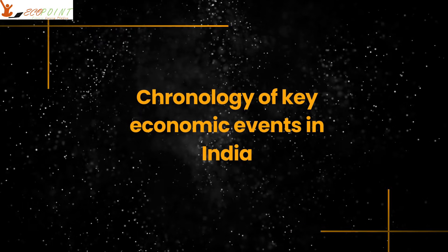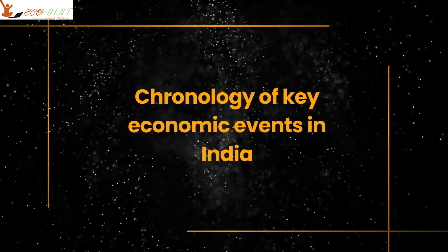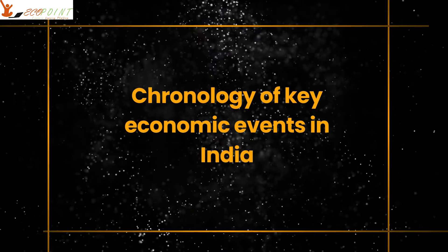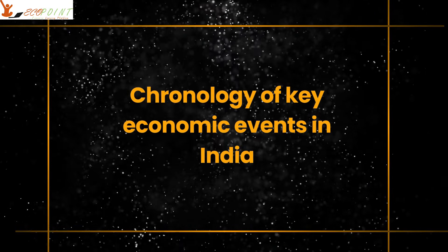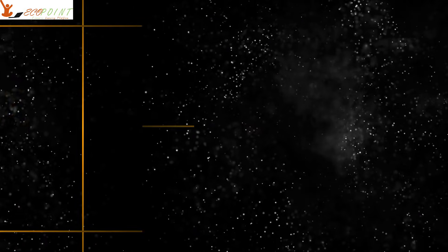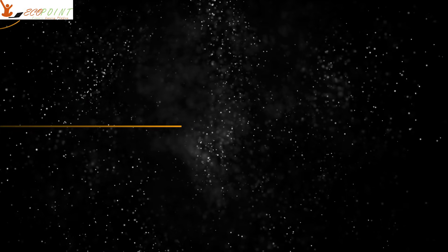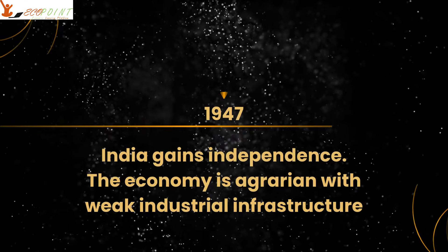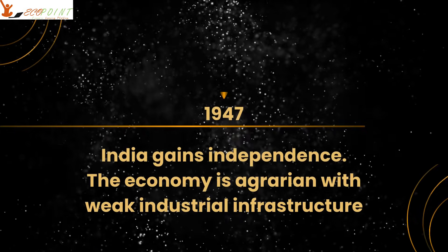Chronology of key economic events in India. In 1947, India gains independence. The economy is agrarian with a weak industrial structure.